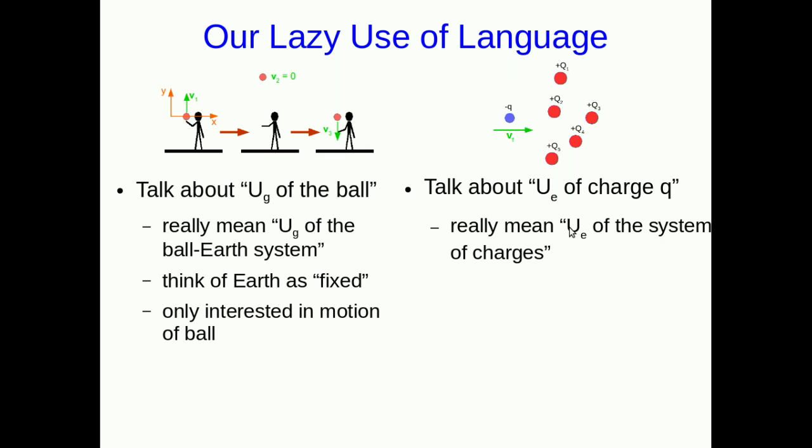But again, we really mean the electrical potential energy of the whole system of charges, the one that's moving and the ones that are influencing its motion. But we're thinking of all those other ones, perhaps, as fixed. We don't care about their motions. We're only interested in the motion of this moving charge, and so we talk about the potential energy as if it just belonged to that charge.